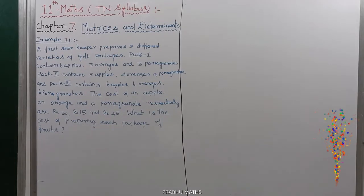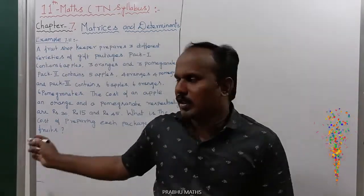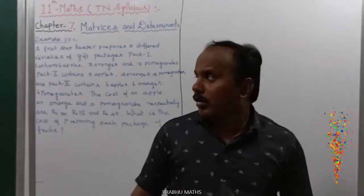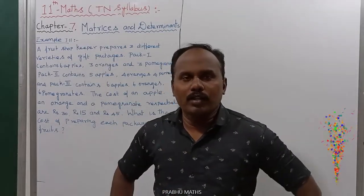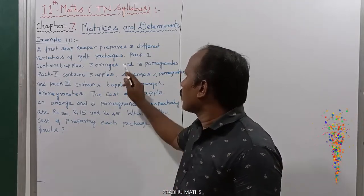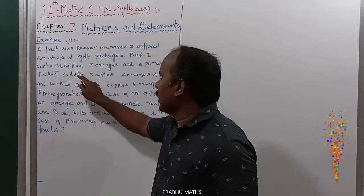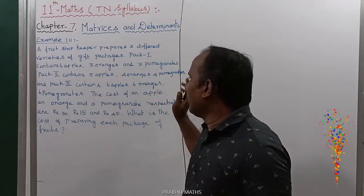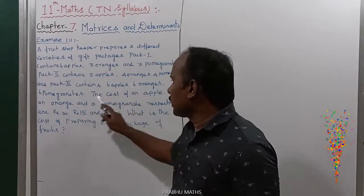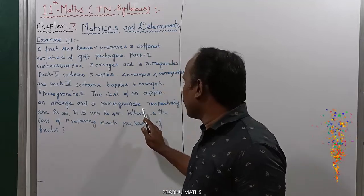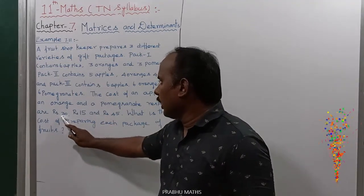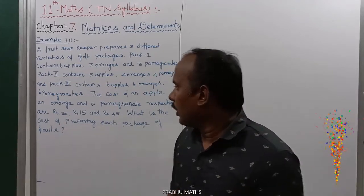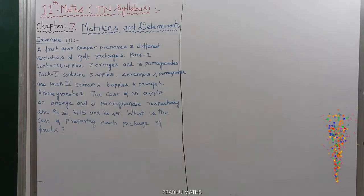For example 7.11, this is a theoretical but easy problem. A fruit shop keeper prepares three different varieties of gift packages. Packet one contains six apples, three oranges, and three pomegranates. Packet two contains five apples, four oranges, and four pomegranates. Packet three contains six apples, six oranges, and six pomegranates. The cost of apple, orange, and pomegranate respectively is 30, 15, and 45. What is the cost of preparing each package?